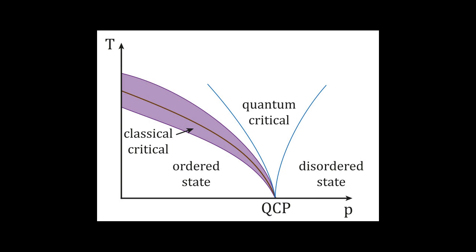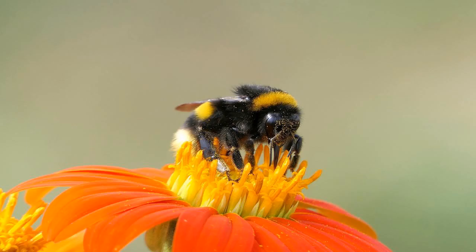The funding environment and Cold War politics of the 1960s and 1970s were also factors that led some physicists to prefer the name condensed matter physics, which emphasized the commonality of scientific problems encountered by physicists working on solids, liquids, plasmas, and other complex matter, over solid-state physics, which was often associated with the industrial applications of metals and semiconductors. The Bell Telephone Laboratories was one of the first institutes to conduct a research program in condensed matter physics.